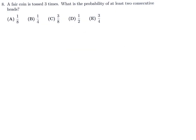A fair coin is tossed 3 times. What is the probability of at least 2 consecutive heads? When you toss a coin 3 times, the possible outcomes are: all heads (HHH), heads-heads-tails (HHT), heads-tails-heads (HTH), tails-heads-heads (THH), and so on.